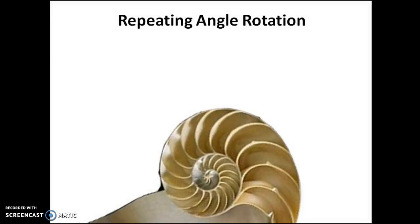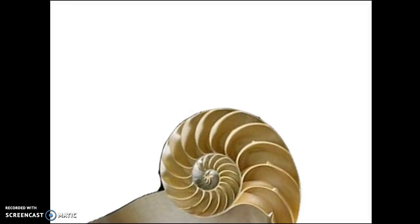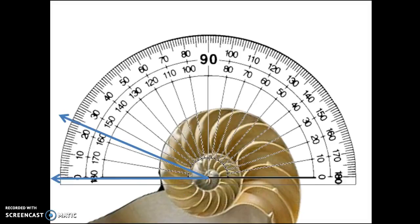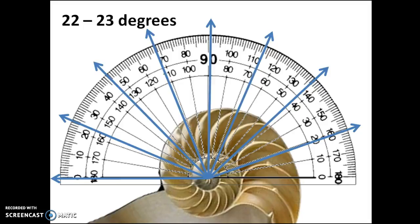Finally, we can see how the shell fits the quality of repeating angle rotation. The three points of the angle are the two chamber corners and the very center of the shell. We can measure the angle using a protractor — it is about 23 degrees between the two chambers. If this shell is a fractal, then this measure will be roughly the same between every pair of chambers. We can see that the degree of rotation is about 22 to 23 degrees each time.